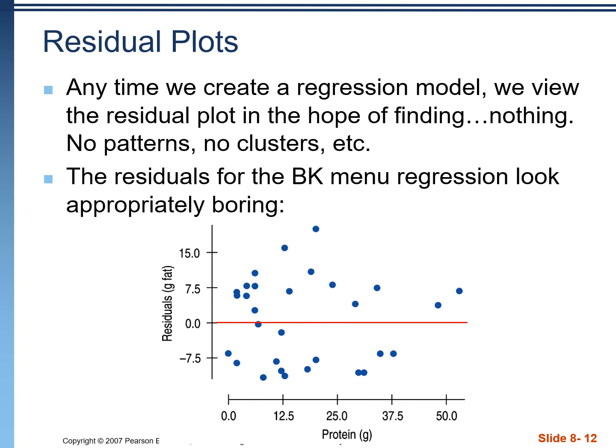This is more like what we want to see in a residual plot: a certain number of points above and below the zero line, they're spread out, and there are no patterns. Any time we run a regression, we look at this plot — if we see patterns, we stop and we don't use the equation for predictions. If it looks okay, then we can go ahead and start plugging values into our regression equation.